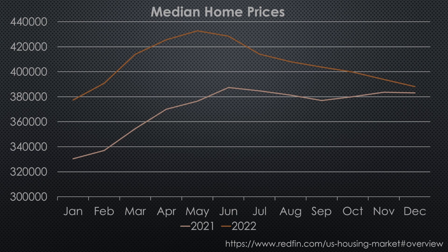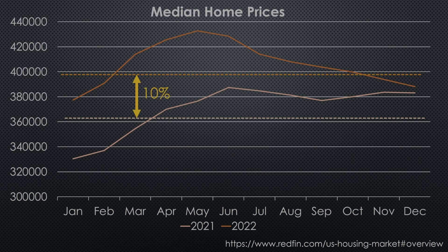Here's the same graph, this time with the yearly median of home prices for 2021 and 2022 shown as dotted lines. As you can see, the yearly median price was about 10% higher in 2022 than it was across 2021.